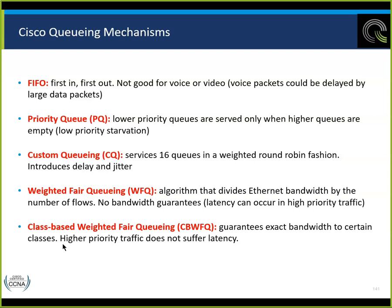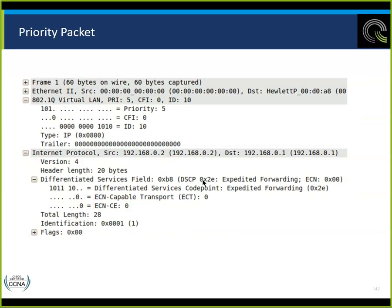Class-based weighted fair queuing (CBWFQ) guarantees exact bandwidth to certain classes — higher priority traffic does not suffer latency. Looking at a packet, we see the virtual LAN priority 5 in the differentiated services field assigned to expedited forwarding. DSCP 0x2E is the hexadecimal, along with ECN. Both layer 2 and layer 3 data packets carry priority markings.